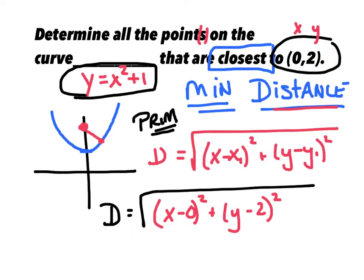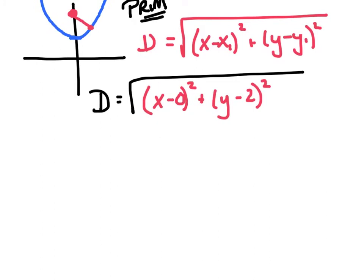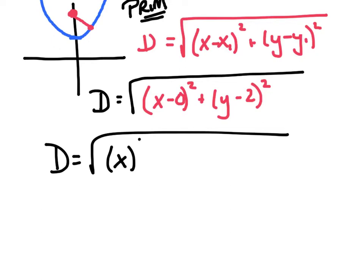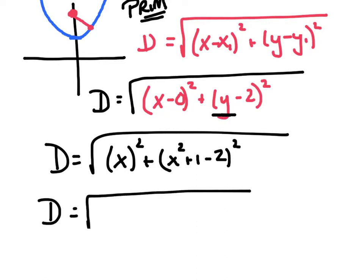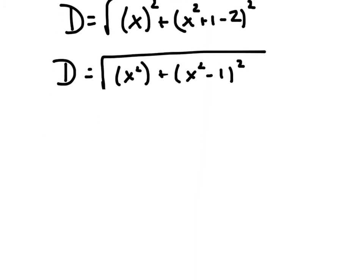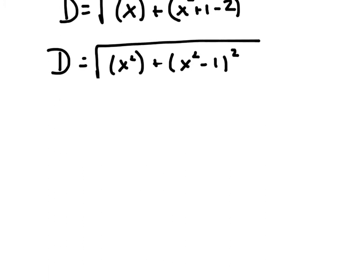Here's where that secondary equation comes in. I just need to take x squared plus 1 and substitute it into y. So I've got my distance equals x minus 0, which is just x squared, plus — in place of y using that secondary equation — x squared plus 1 minus 2 squared. Now I have one formula in terms of x only. Cleaning it up: I've got x squared plus x squared minus 1 squared.